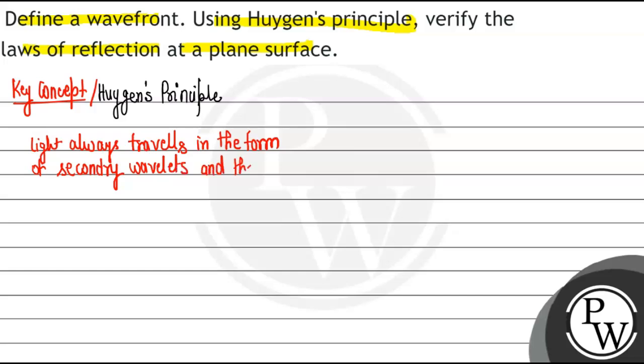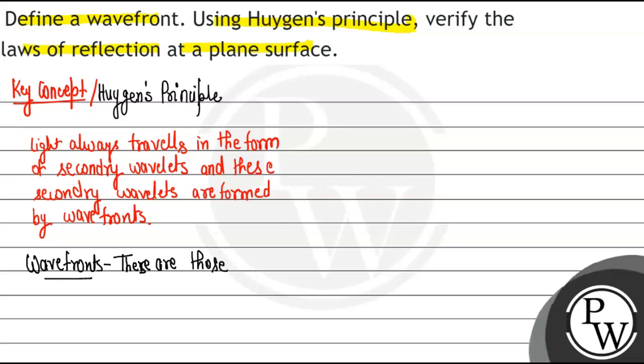And these secondary wavelets are formed by wavefronts. Okay, secondary wavelets are formed by wavefronts. A wavefront is basically a plane. If I define wavefronts, these are those imaginary planes.